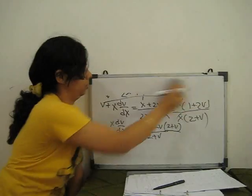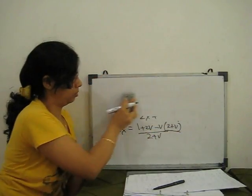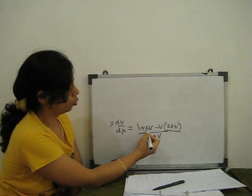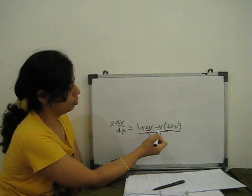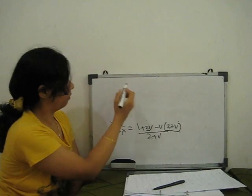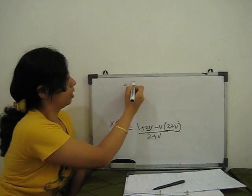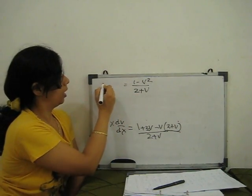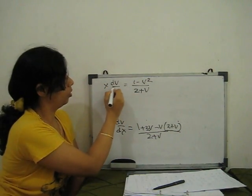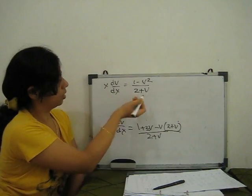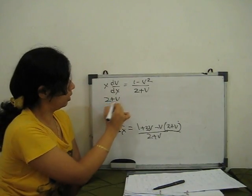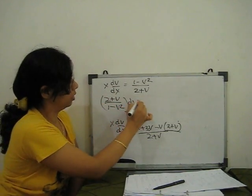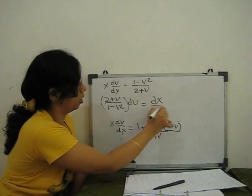Separating variables: (2 + v) / (1 − v²) dv = dX / X. The 2v terms cancel out, confirming the numerator of the v-equation is 1 − v². So we have (2 + v) / (1 − v²) dv = dX / X, which is now separable in v and X.